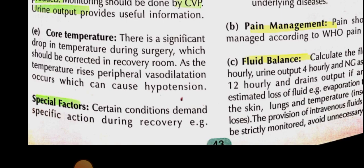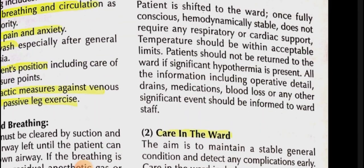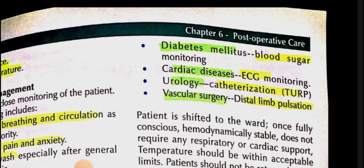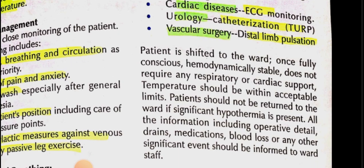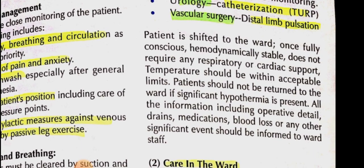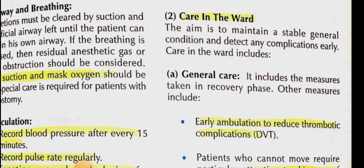Special factors: some conditions require specific actions. For a diabetic patient, monitor blood sugar; for cardiac disease, do ECG monitoring; for urology problems, perform catheterization; and in vascular surgery, check distal limb pulsation. After these checks, shift the patient to the ward when fully conscious, hemodynamically stable, not requiring respiratory or cardiac support, and with normal temperature. Document all operative details: drains, medications, blood loss, and any significant intraoperative events, and hand over notes to the ward staff.